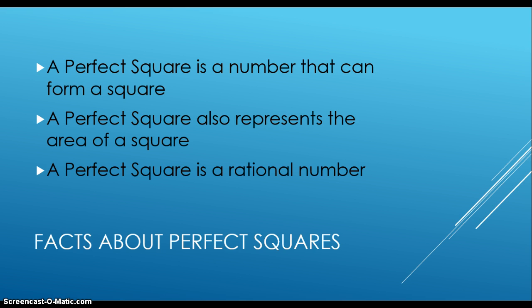Some facts about perfect squares: a perfect square is a number that can form a square. It also represents the area of a square, and it's also a rational number because whole numbers are rational numbers.